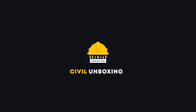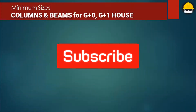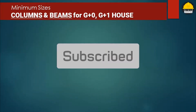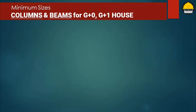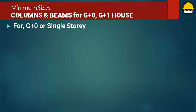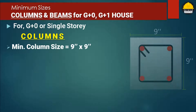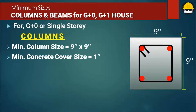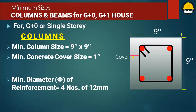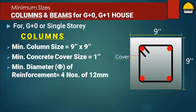If you are going to construct a house of ground floor only, then for columns: minimum column size should be 9 inch by 9 inch or 230 mm by 230 mm, minimum cover should be 1 inch or 25 mm, and minimum diameter of reinforcement steel should be 12 mm with four numbers of bars.